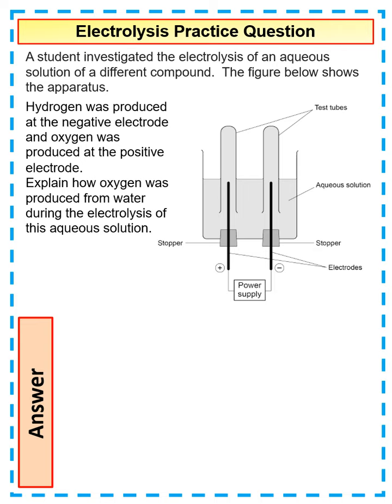So hydrogen was produced at the negative electrode. Oxygen was produced at the positive electrode. When we're talking about the electrodes, it's worth remembering that opposites attract.